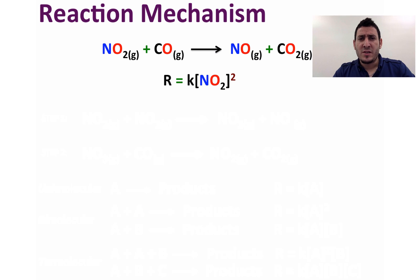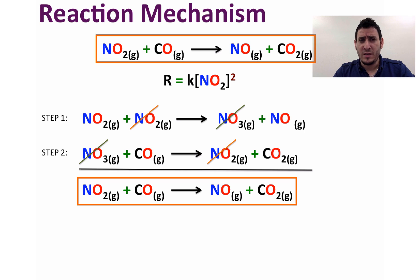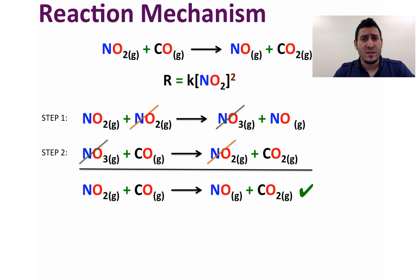A reaction mechanism is a series of elementary steps that must satisfy two requirements. For the first one, when you have two steps, summing these two steps, the overall reaction has to be the same as the reaction we are studying. And therefore here, we can see that the first requirement of the mechanism is satisfied.